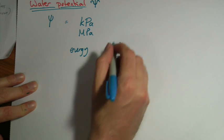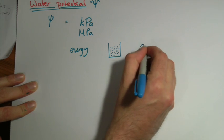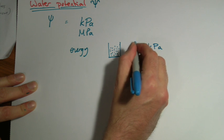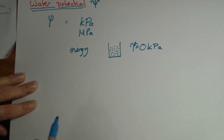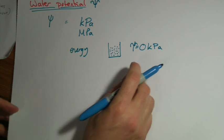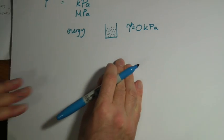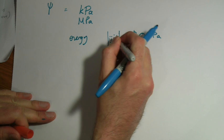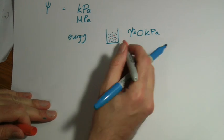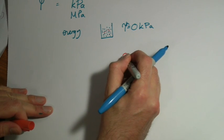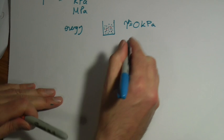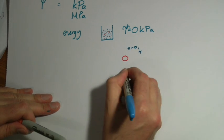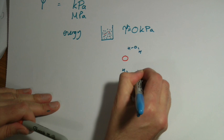If this is pure water, we would say that it has a water potential of zero kilopascals. Now, if we introduce a solute to it, something that will dissolve, what will happen if we zoomed in and looked at the molecule, the solute and the water molecule will actually form hydrogen bonds.